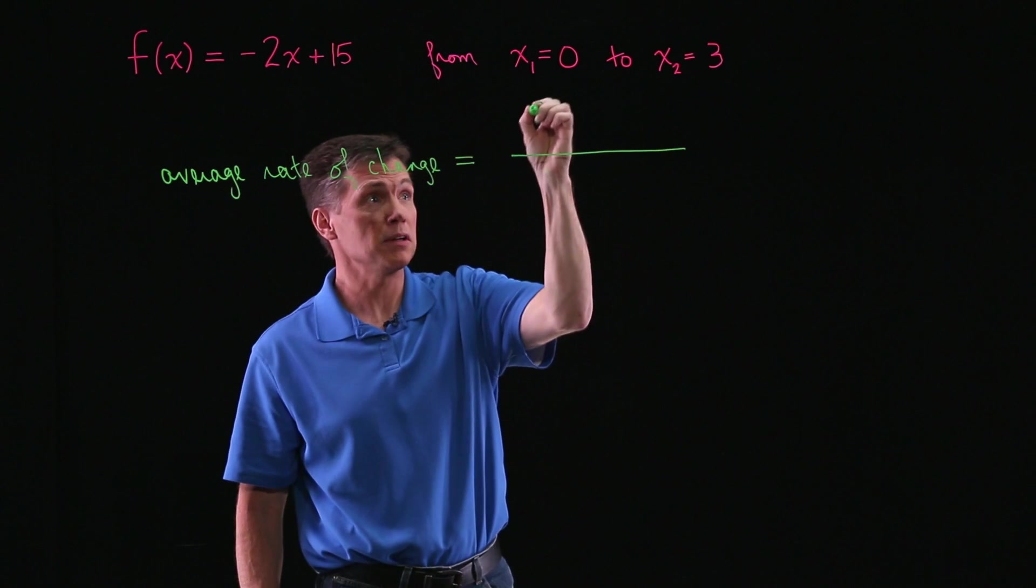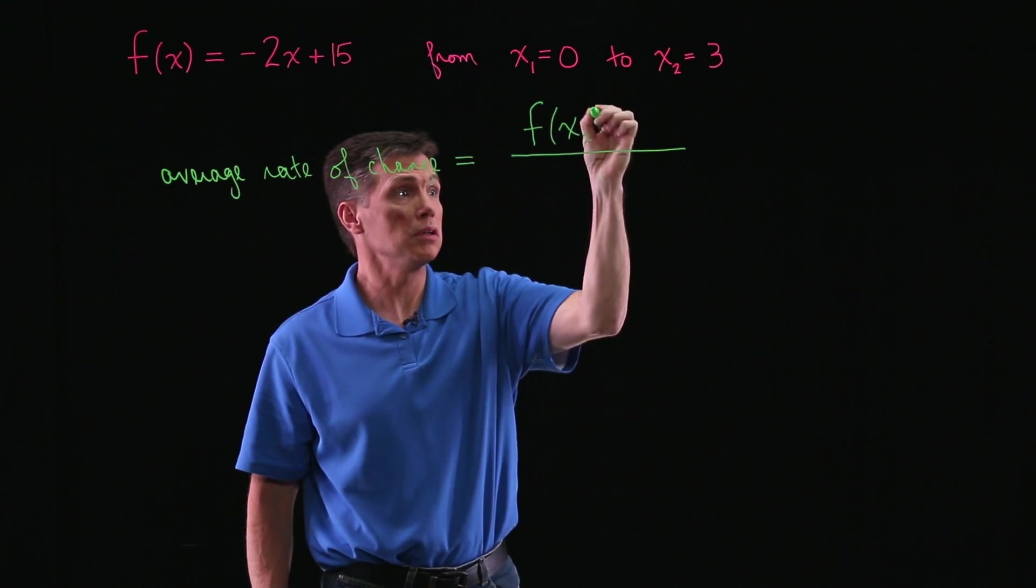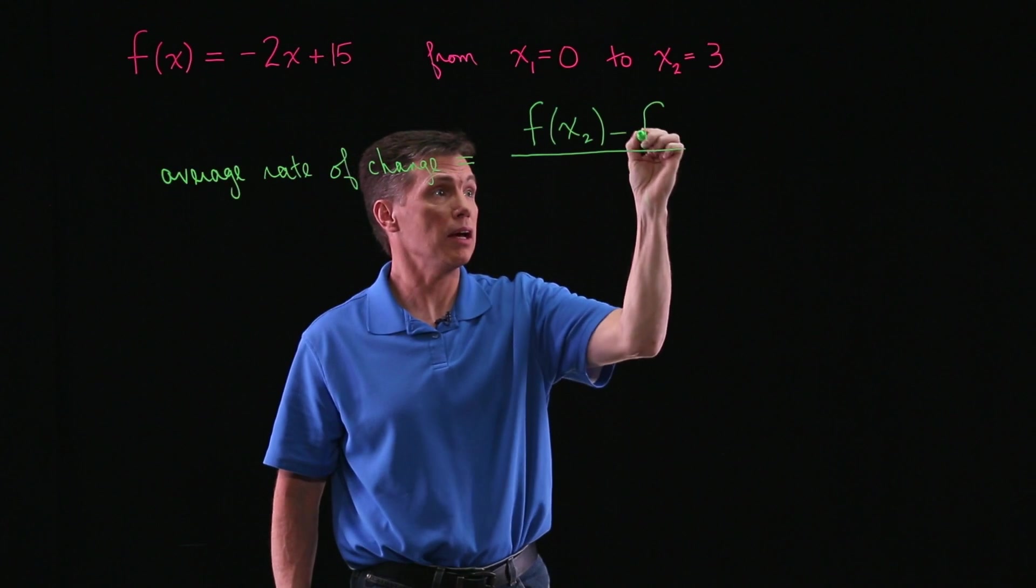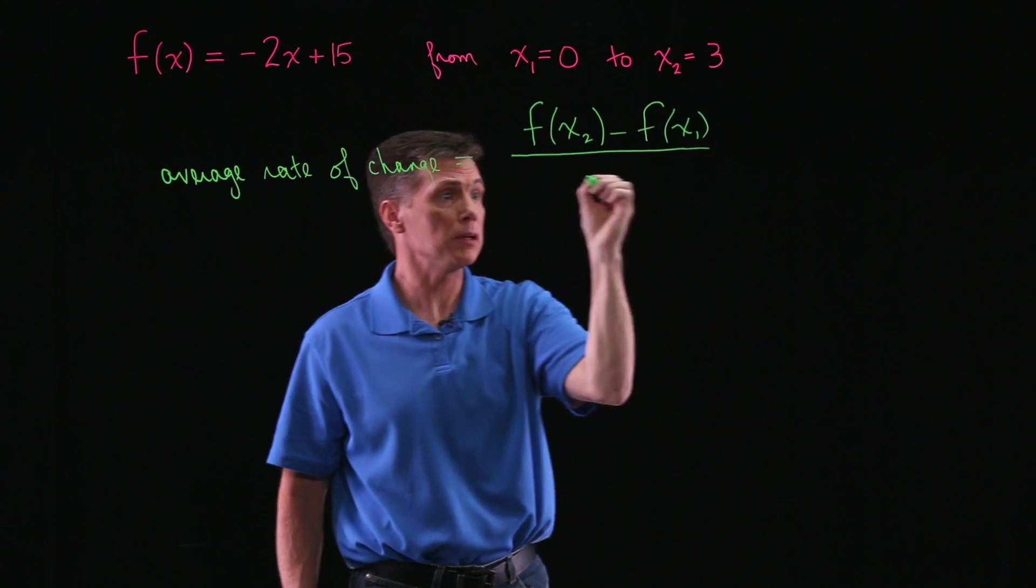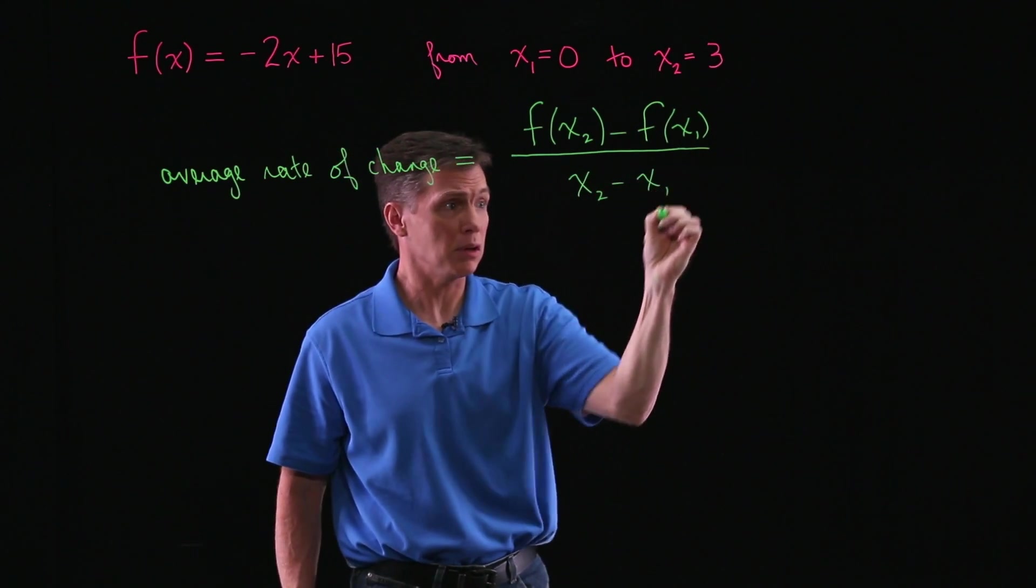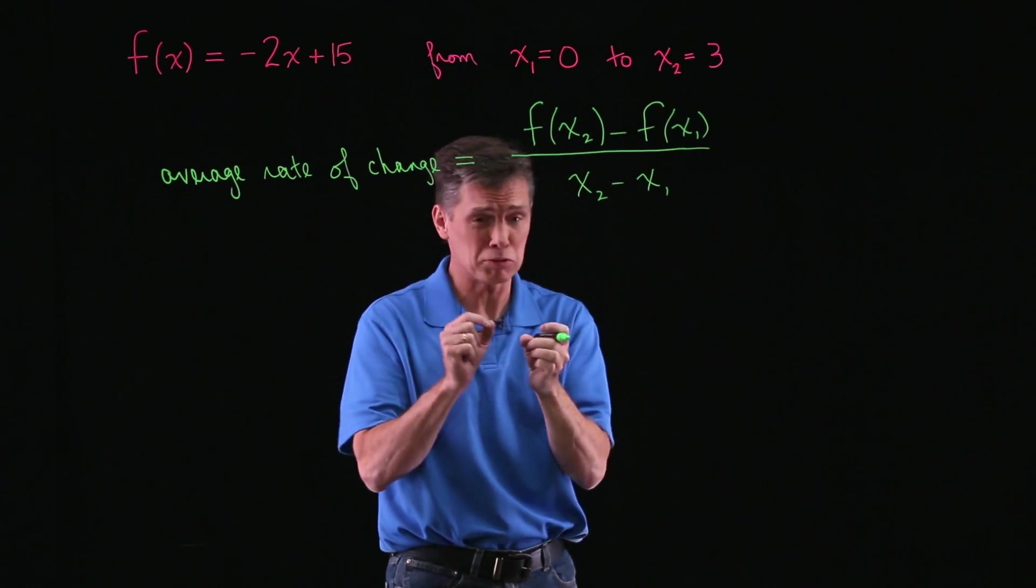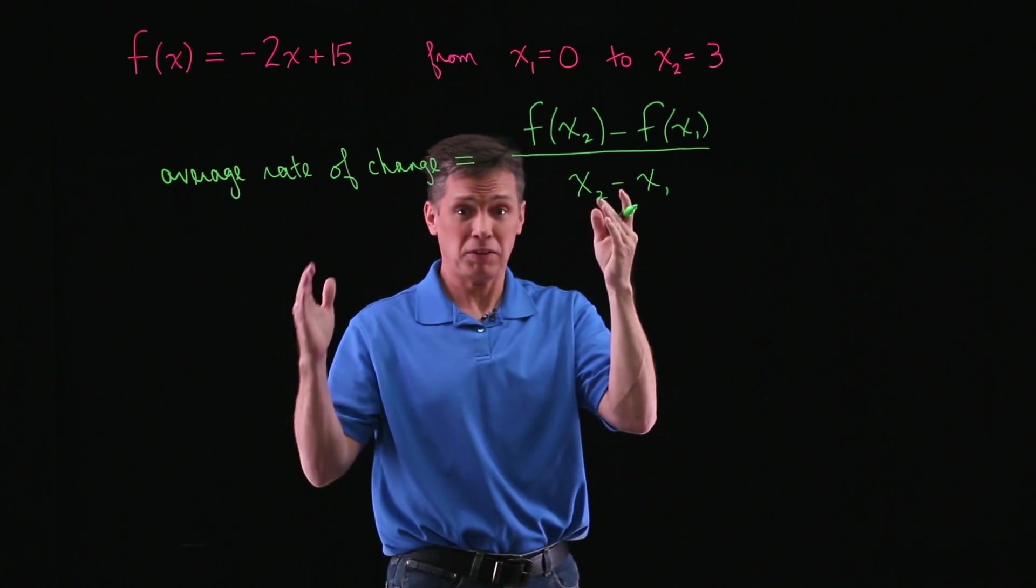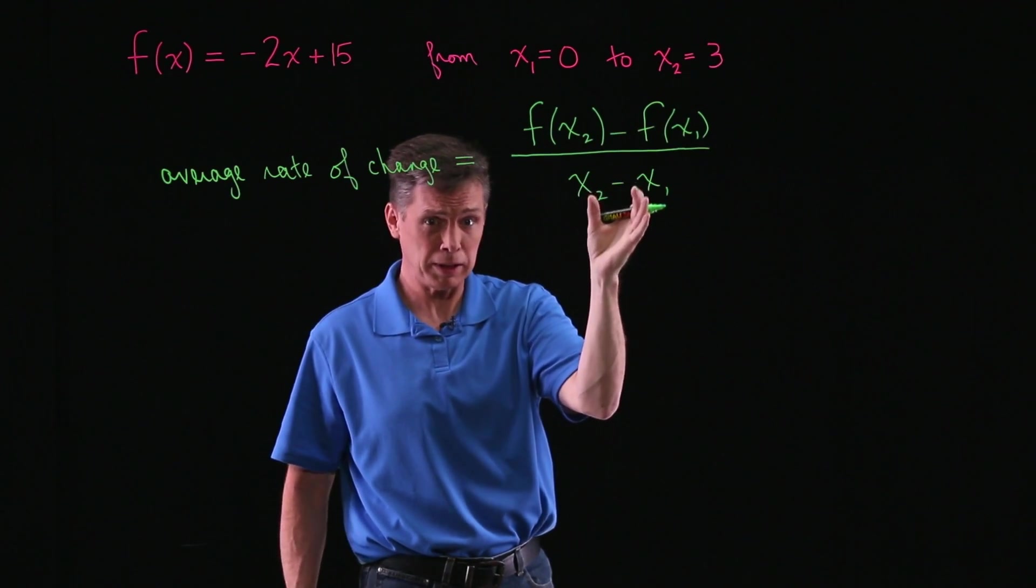Let's go ahead and write your formula for average rate of change, which is this fraction: f of x sub 2, subtract f of x sub 1 in the numerator, and then x sub 2 minus x sub 1 in the denominator. And part of knowing that formula is I hope you've realized that, hey, that's just slope, because that's exactly what it is. Difference of y's over difference of x's.